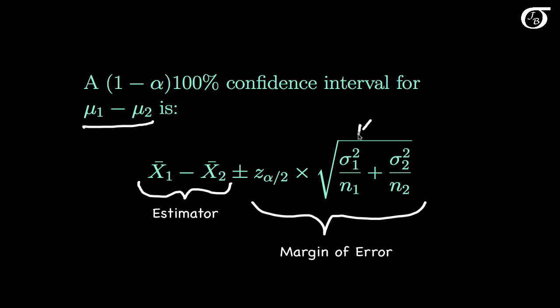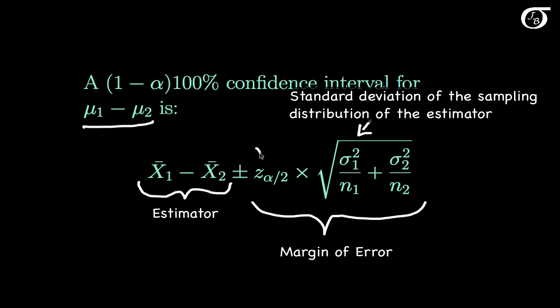This part here is the standard deviation of the sampling distribution of our estimator, and this z value is our usual z value that we've discussed previously that we get from the standard normal distribution.